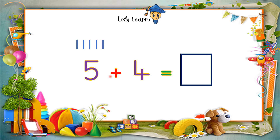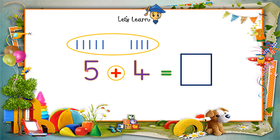Now check the operator — what is the operation we have to perform? That is plus. Plus means to put the things all together. Because there is a plus sign, we are going to make 4 more lines, because 4 is the next number: 1, 2, 3, 4. Now we are going to put all the lines together and count them. Let's count them with me: 1, 2, 3, 4, 5, 6, 7, 8, 9.